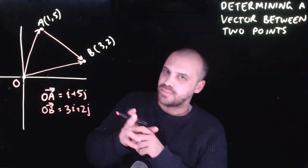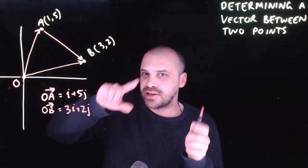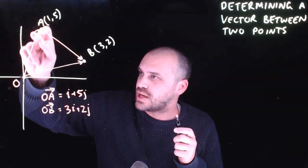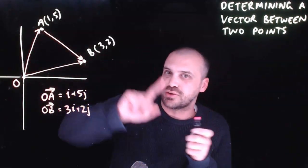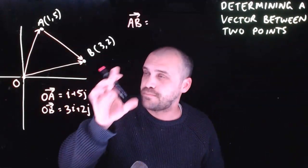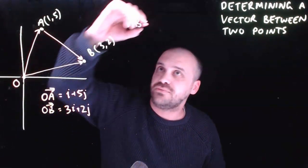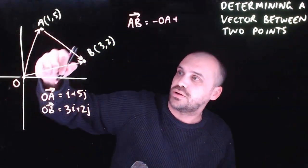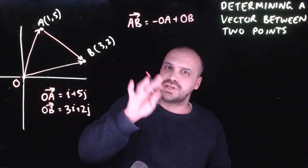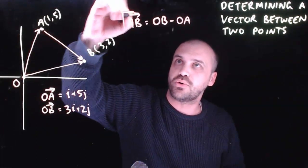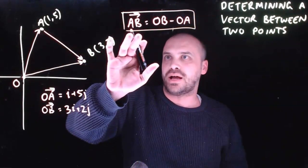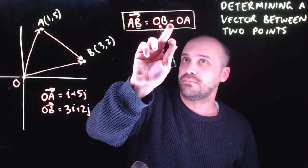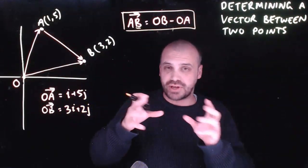So we have these two position vectors, and we can express vector AB as a linear combination of those position vectors. To get from A to B, we move down OA and forward along OB. Vector AB is equal to negative OA plus OB, or written more naturally: OB minus OA.